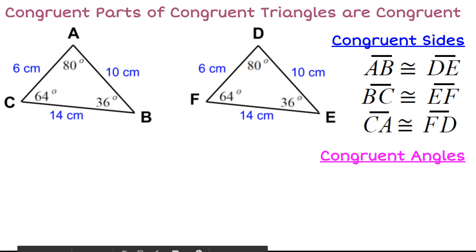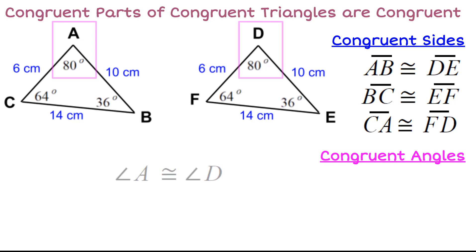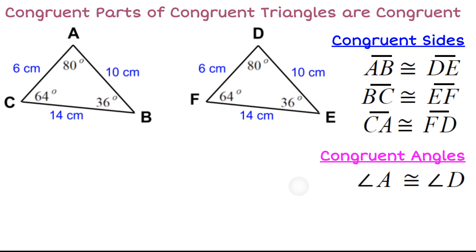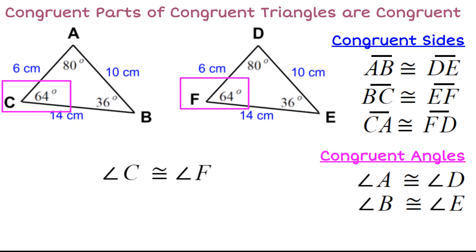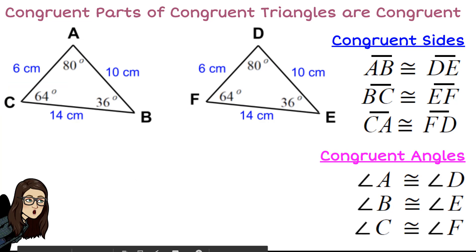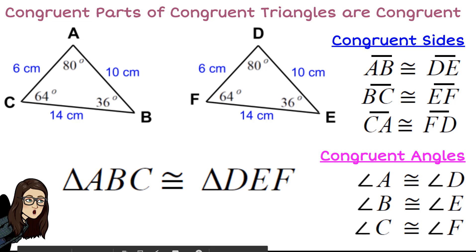Now let's talk about the angles. Angle A is 80 degrees and angle D is also 80 degrees, so angle A is congruent to angle D. Angle B is congruent to angle E because they both measure 36 degrees. Angle C is congruent to angle F because they both measure 64 degrees.